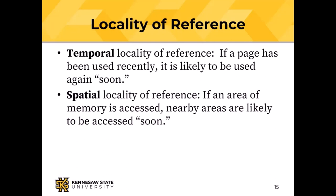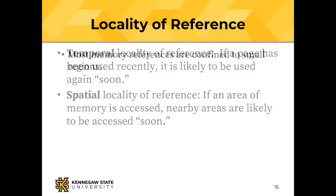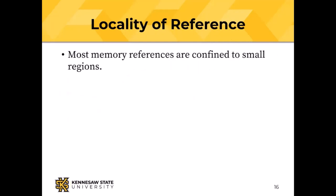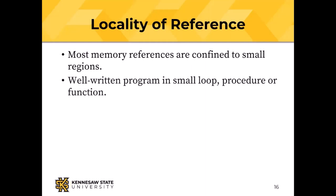There's also spatial locality of reference: if an area of memory is accessed, likely nearby areas will be accessed soon — maybe even that same area. Think about your loop or accessing data. Two kinds of locality of reference: temporal, which means time, and spatial. Most memory references are confined to small regions at any given instant. Your program might wander all over memory as it runs for minutes at a time, but at any given instant it's likely to be referring to small regions. That's why caches work.